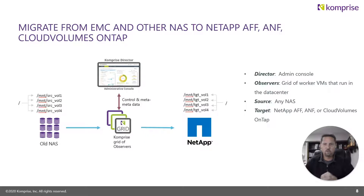This is what our Comprise architecture looks like for data migrations. We have our Comprise Director, which is our UI used to configure and add shares and create migration tasks. We have our old NAS system, which we add in as shares to the Comprise Director. Then we have our Comprise grid of observers — small virtual appliances that are on-premise and serve as the data movers to enable the migrations. They're very scalable, scaling up for very large file systems or back down for smaller ones. In this case, we're looking at a customer use case where we utilized Comprise Elastic Data Migration to migrate from an old ZFS platform to NetApp.